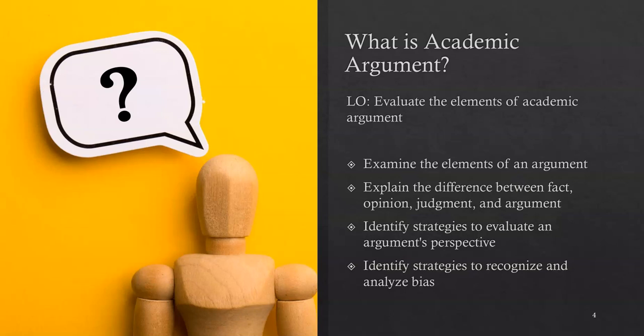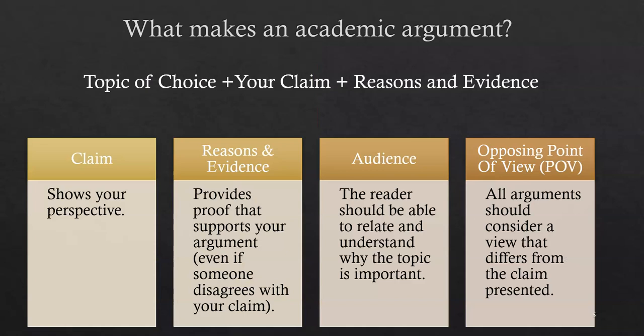So what is academic argument? The learning outcome for this topic is to evaluate the elements of academic argument. In order to do that, you need to examine the elements of an argument, explain the difference between fact, opinion, judgment, and argument, identify strategies to evaluate an argument's perspective, and identify strategies to recognize and analyze bias. What makes an academic argument an academic argument? You begin with a topic, add your claim, and then add your reasons and evidence that support that claim.